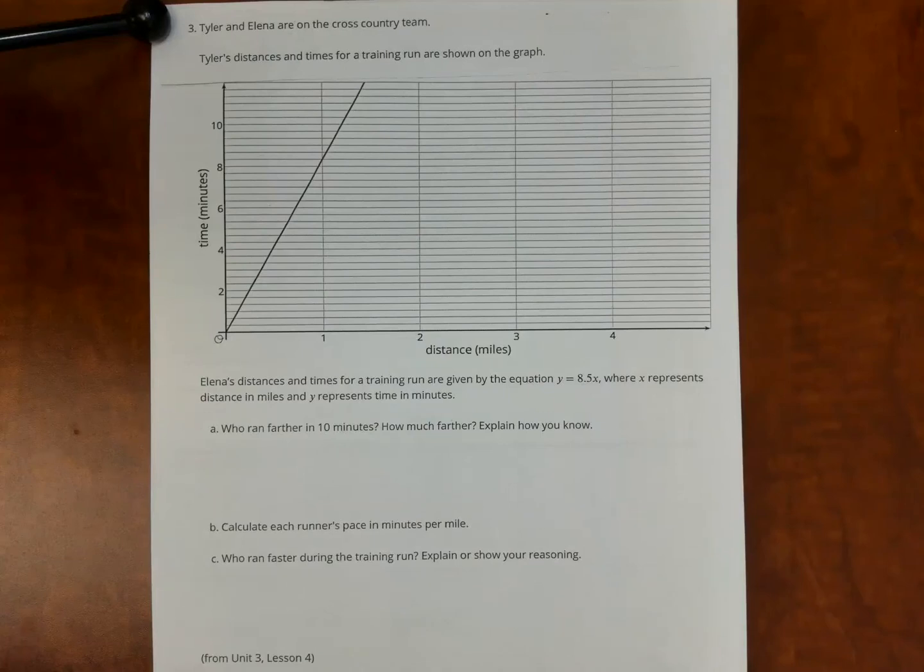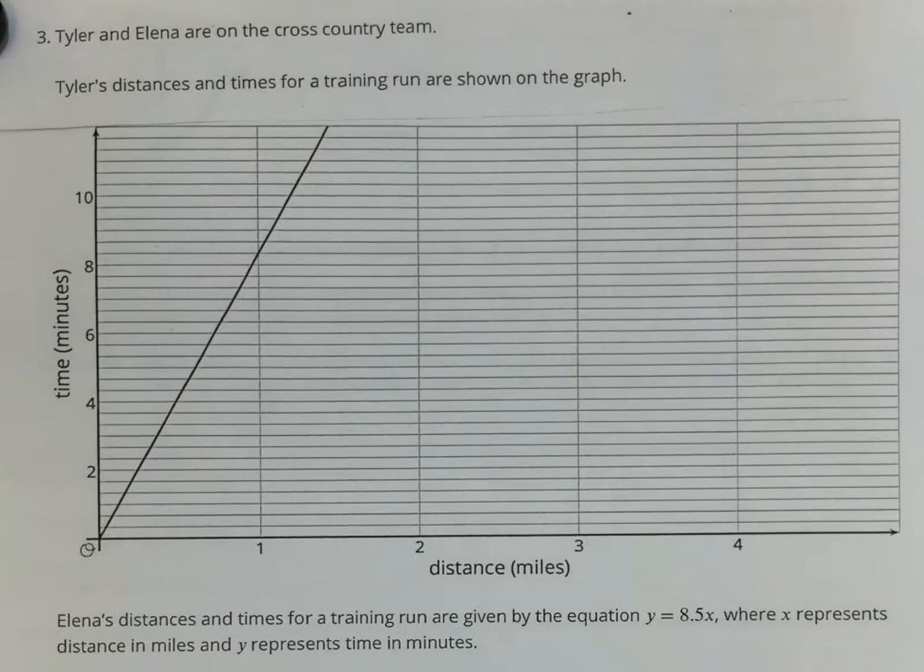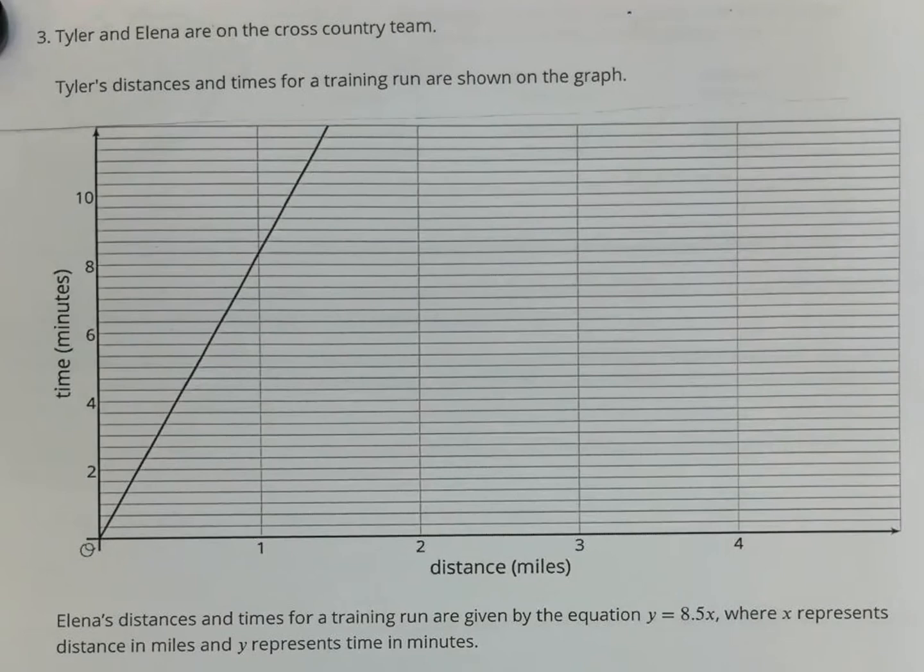All right, ladies and gentlemen, Mr. Urutia here going over unit three, lesson five, practice problem number three. So let's start by reading the problem. Tyler and Elena are both on the cross-country team. Tyler's distances and time for a training run are shown on the graph.